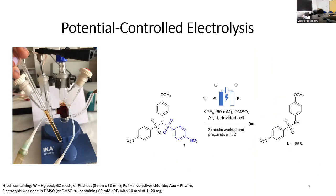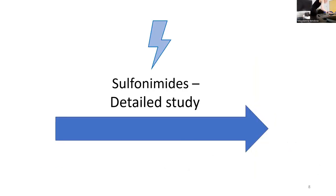The NMR of the solution showed that the conversion was 100%. I was really happy and I decided to isolate the corresponding sulfonamide by acidic workup and then using preparative TLC. After this, I knew what was going on and decided to try other different working arrangements of the experiment. But this is not really important because my time is limited, and I would like to discuss other sulfonamides that I chose and prepared for my study.